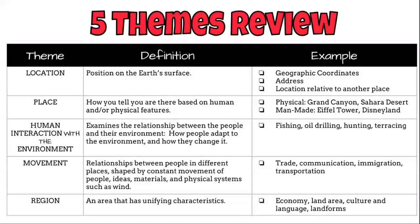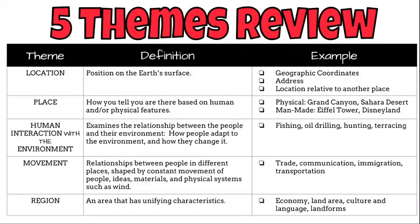Five themes review: location, place, human interaction with the environment, movement, and region. You can look at this chart of basic definitions — feel free to pause the video here and write down those definitions or examples.